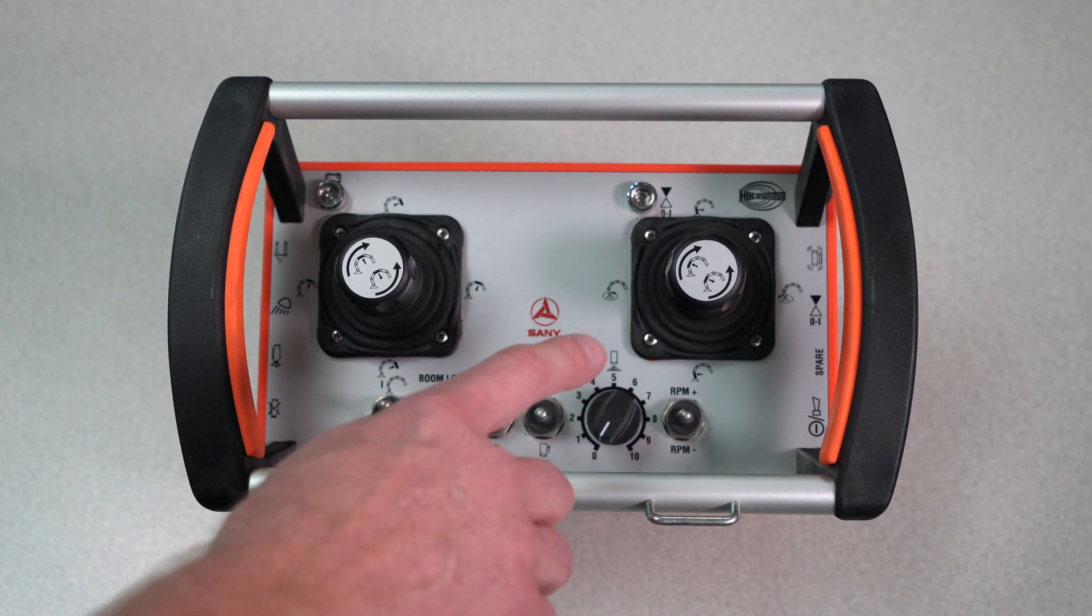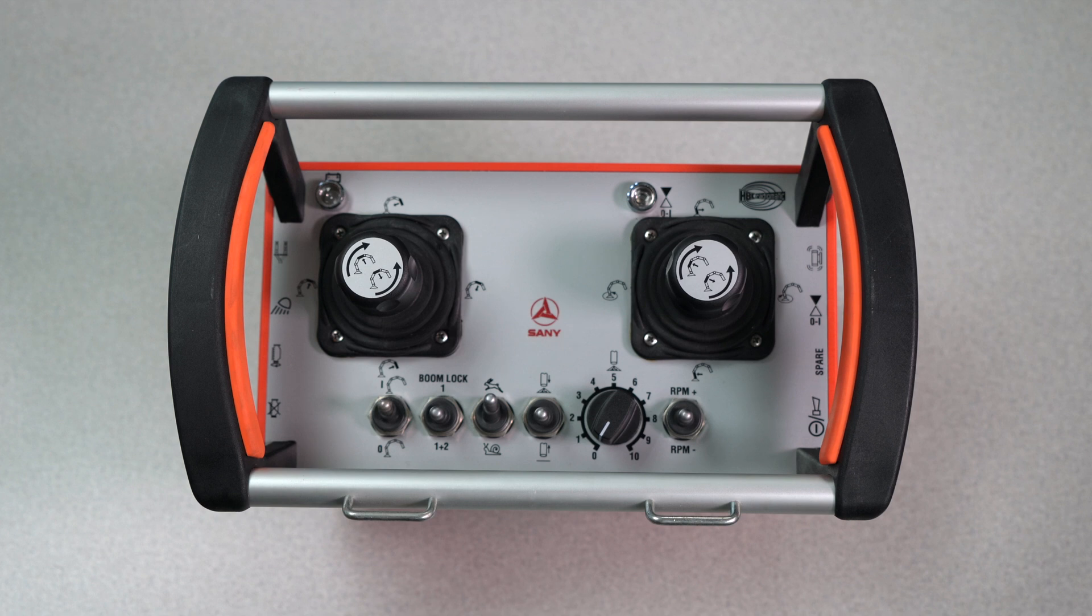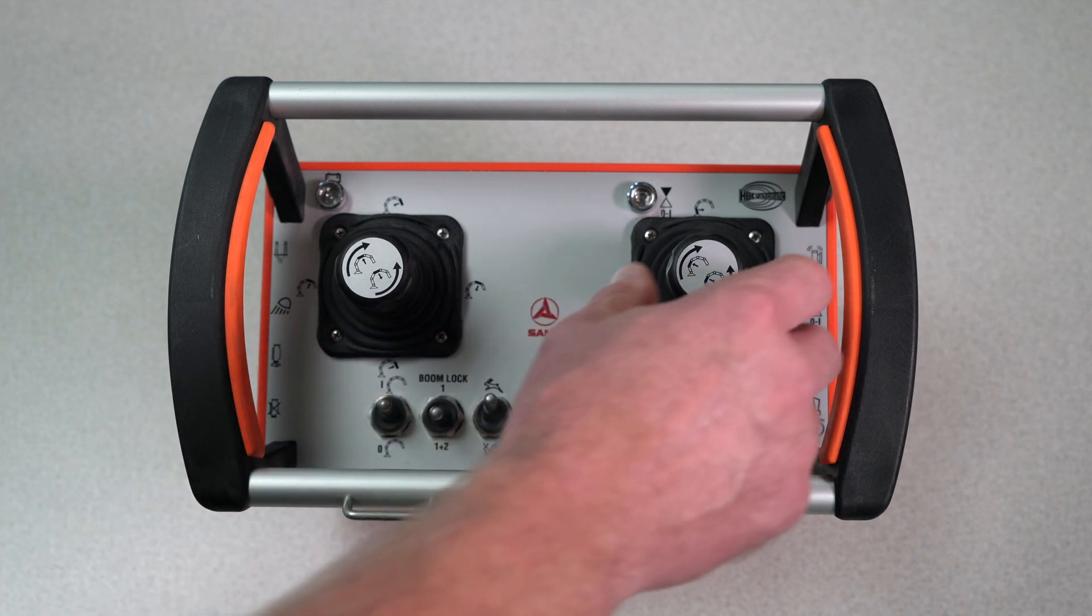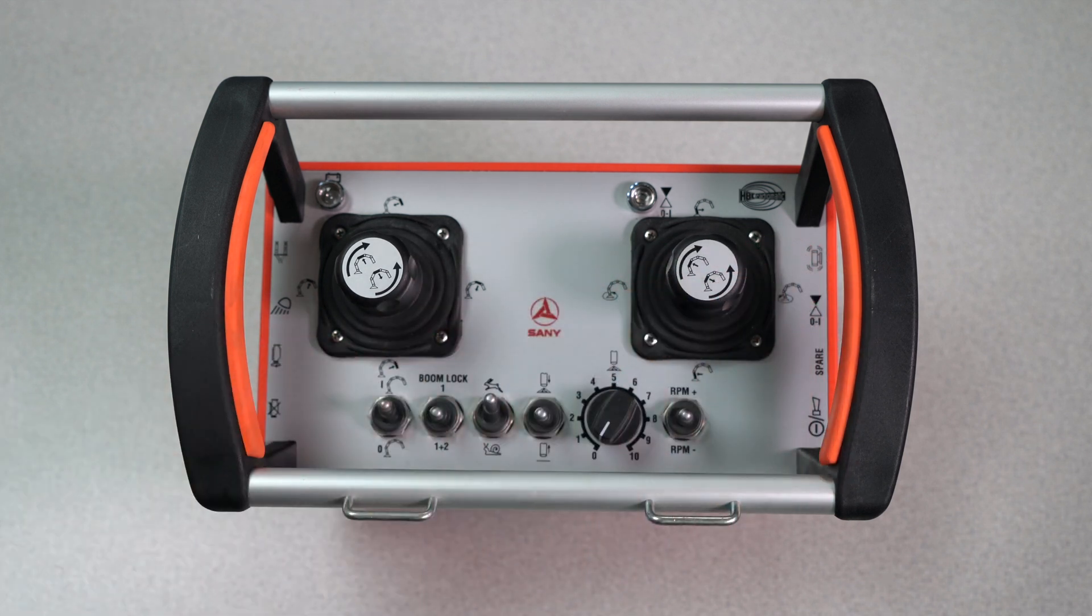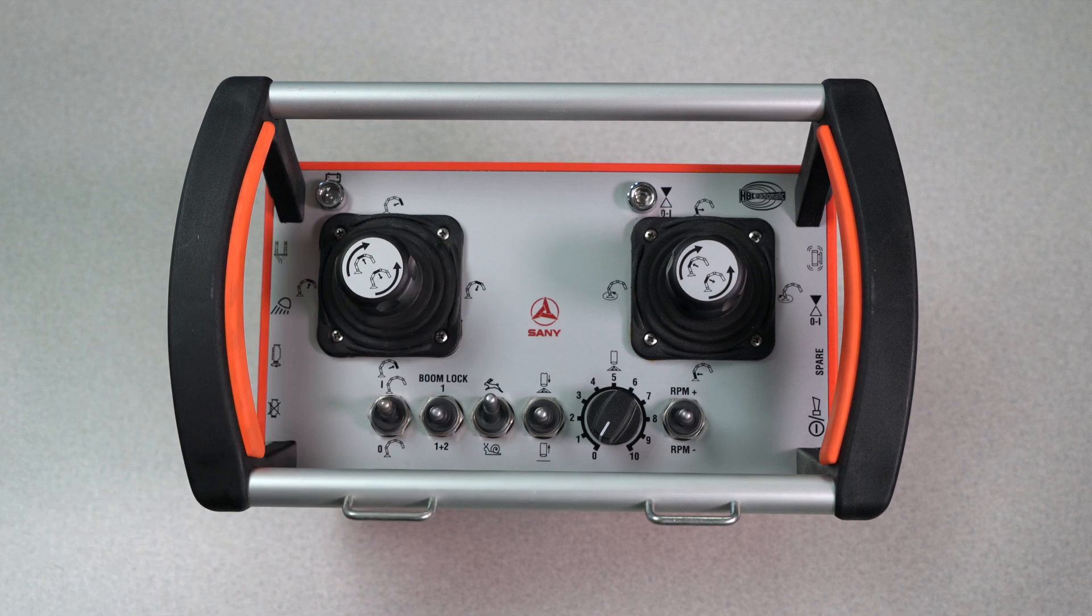The joysticks on the right-hand side, your up and down axis will be arm one up and down. Your side-to-side axis will be rotation, counterclockwise or clockwise, and your twist function will be arm two in and out.